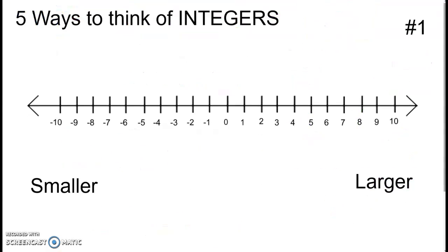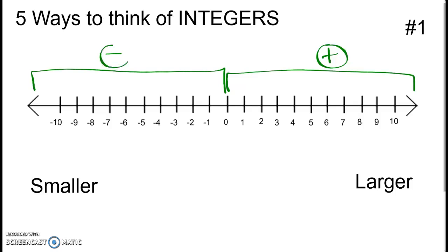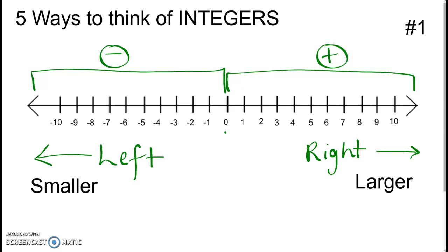Next I want to go over five different ways that you can think of integers — thinking of positives and negatives. The first one is a number line. On a number line, we have positives and we have negatives. All of the numbers you see here are integers, including 0. The numbers get bigger as we go to the right, and as we head to the left, the numbers have a smaller value. So that's one way to think of integers — right and left on the number line.